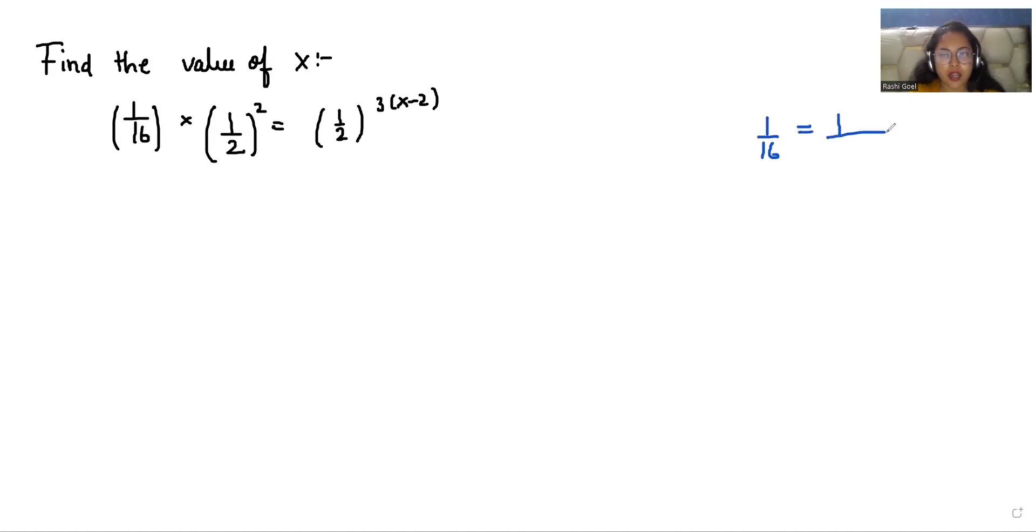1/16 we can write as 1/(2×2×2×2), or we can write it as (1/2)⁴, or (1/2) to the whole power 4, because 1×1×1×1 is also 1.